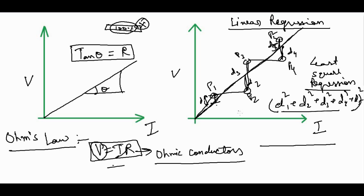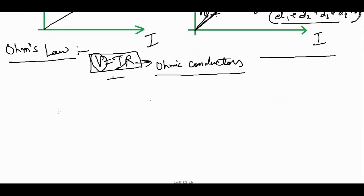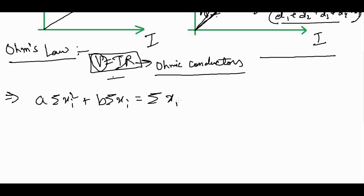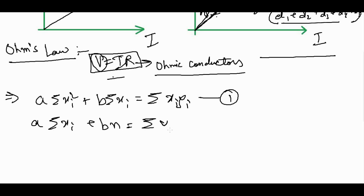The problem that comes in the exam is: you are given points p1, p2, p3, p4, and p5, and asked to find the straight line that best fits them following the least square regression rule. For this, we have two formulas: (1) a·Σxi² + b·Σxi = Σxi·yi, and (2) a·Σxi + b·n = Σyi.